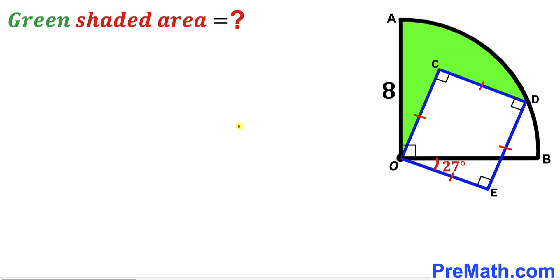Let's get started. Focusing on the blue square OCDE, we know all interior angles are 90 degrees, so this interior angle is 90 degrees, and this angle is 90 degrees as well. Therefore we conclude that the tiny angle AOC is going to be 27 degrees as well.